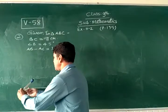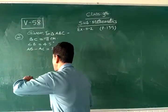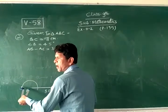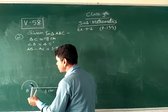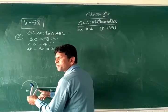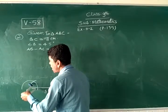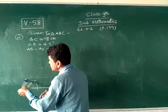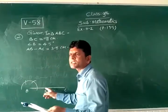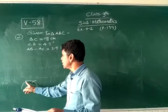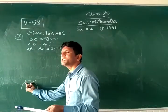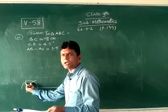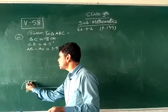With center B and an arc of any radius, cut like the semicircle, and without changing distance, from this point we cut an arc. This angle is 60 degrees, another angle 60 degrees. Then 60 plus 60 is 120 degrees. And the measure of this space is 60 degrees, so we bisect this 60 degrees. So 30, 30, so that 60 plus 30 will be 90.